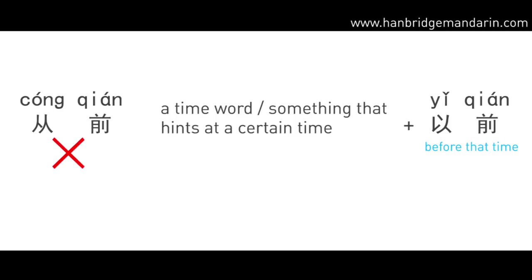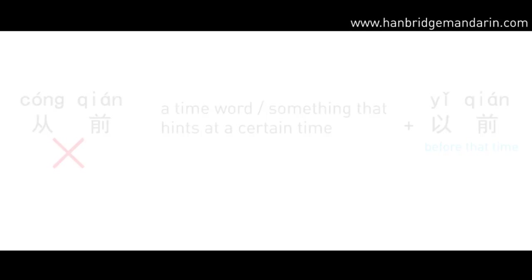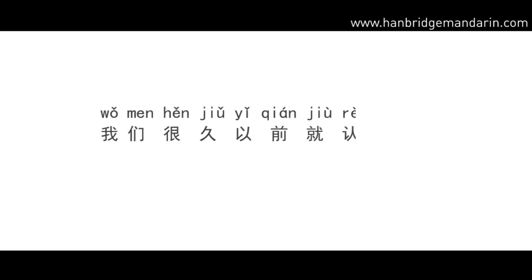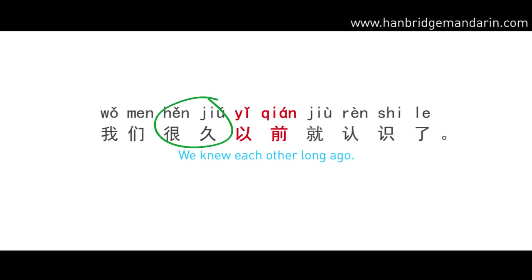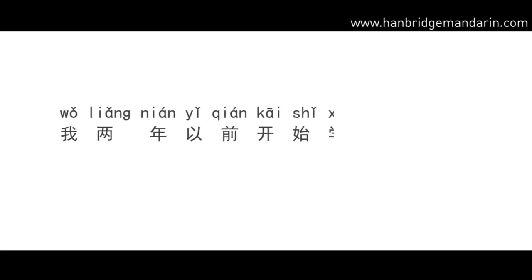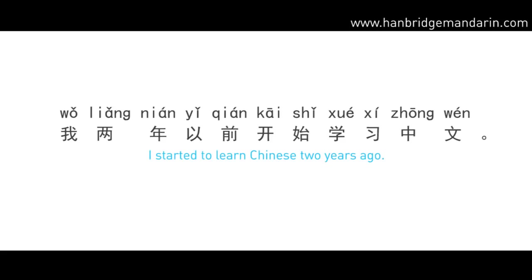Because 从前 is only used to show a rough idea of the past in general, 以前 must be used when a specific time word is present. For example: 我们很久以前就认识了 — 很久 is a time word, so we cannot use 从前. 我两年以前开始学习中文 — two years is a specific time, so we cannot use 从前.